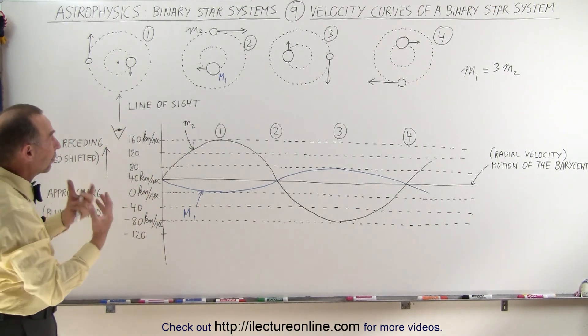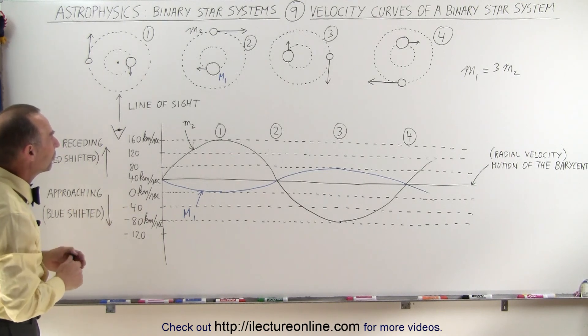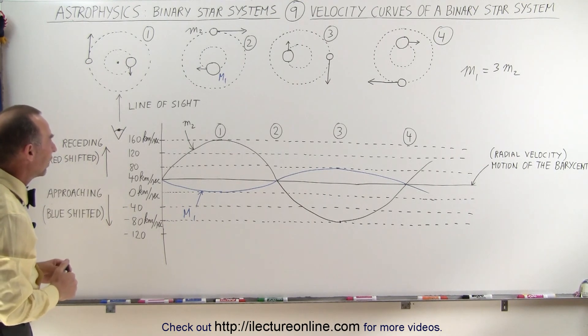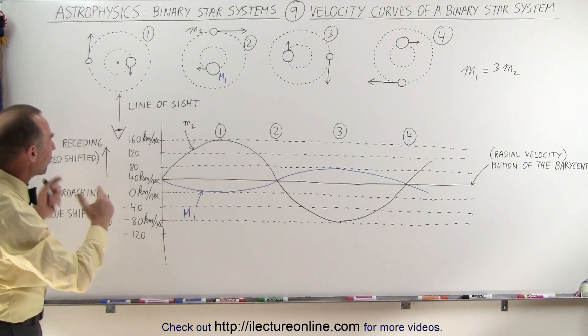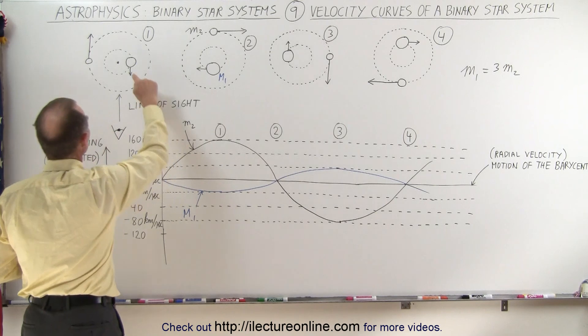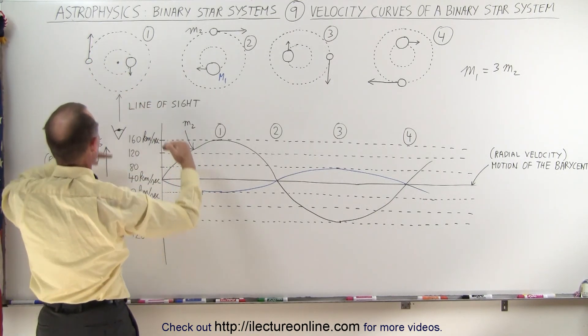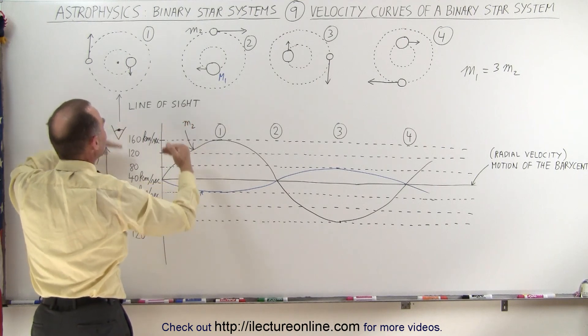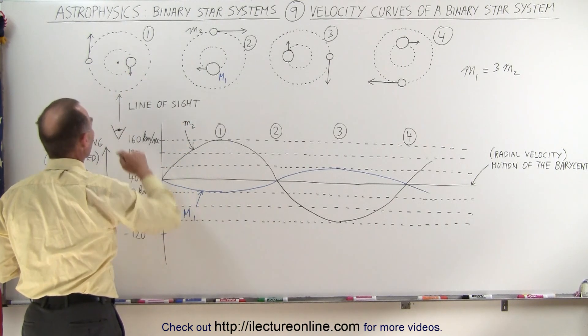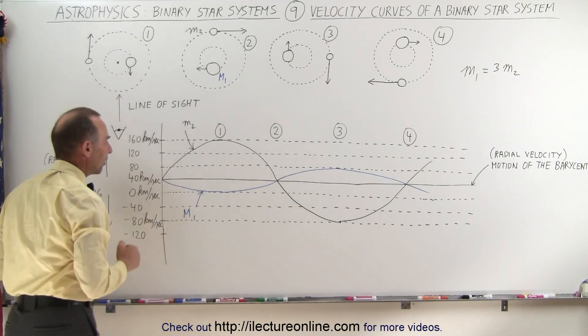So we should be able to pick that up, if they're not too far away, by using the Doppler shift of the spectrum of the light coming from the two stars. And so when we try to follow that and chart that, you can see that as the small object is moving away from us, we have what we call a positive velocity relative to the barycenter, and as the object is moving towards us, we have a negative velocity relative to the barycenter.